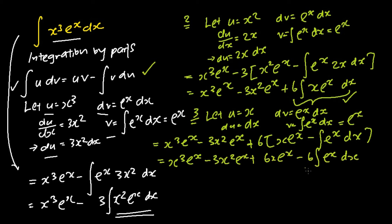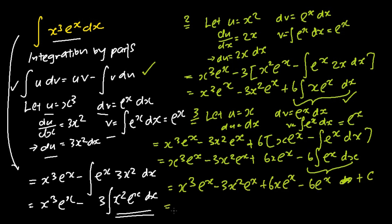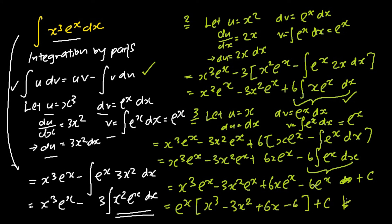The last step: I evaluate the integral of e to the power of x, which is basically just e to the power of x. I then factorize the e to the power of x out of the equation to get my final answer, which is e to the power of x times the square bracket x cubed subtracting away 3x squared plus 6x minus 6, plus C. And this will be the final answer to the integration of x cubed e to the power of x dx.